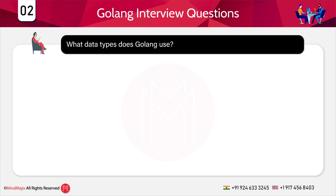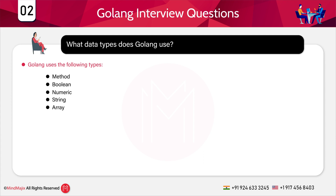Moving on to the next question: what data types does Golang use? Golang uses the following types: boolean (true and false), numeric (integer, float, double), string, arrays, slice, struct, pointers, function, interface, map, and channels. These are the data types that Golang uses.